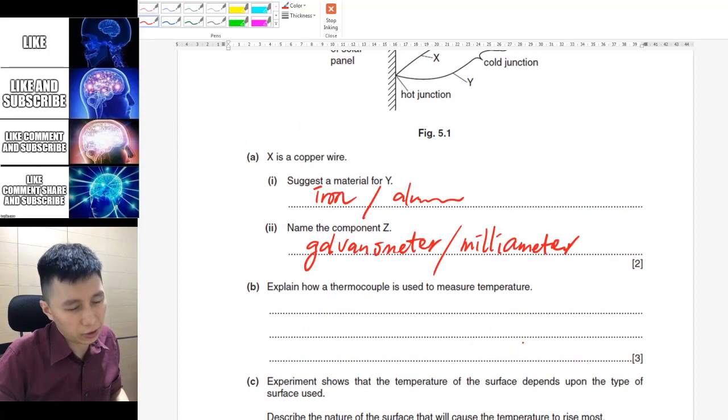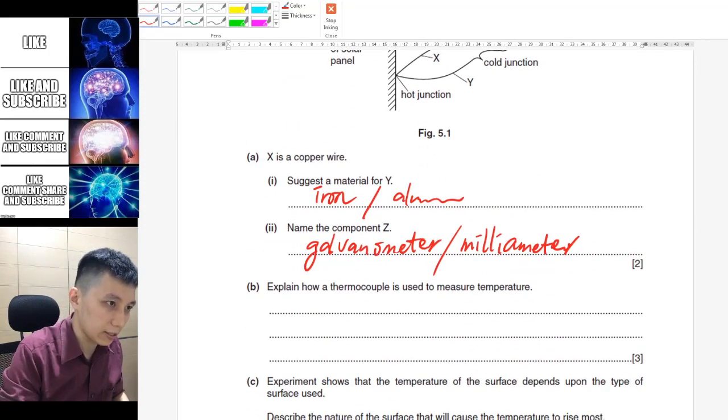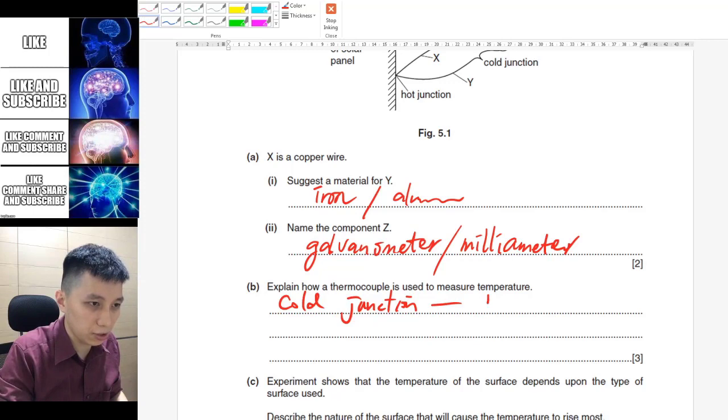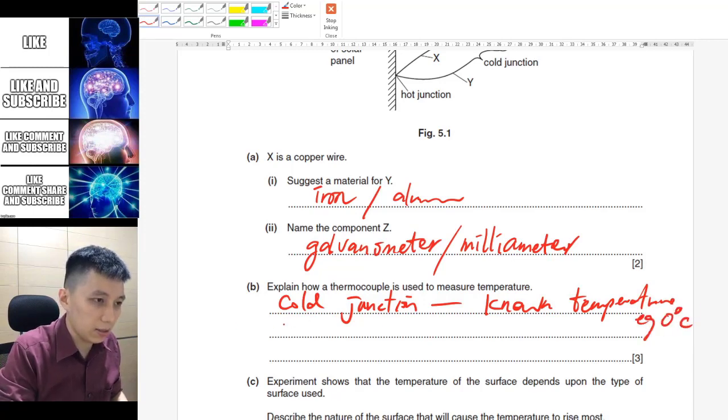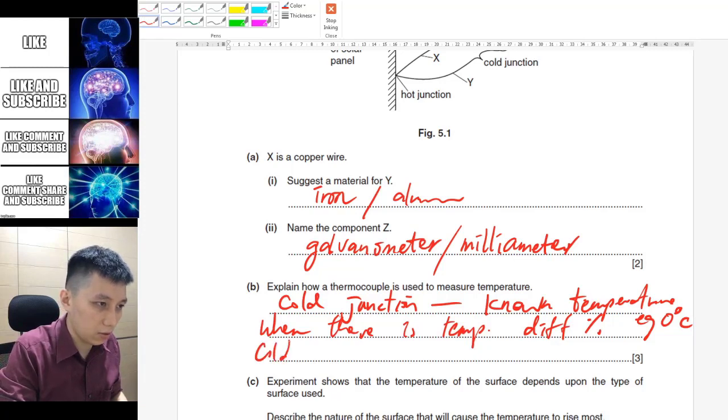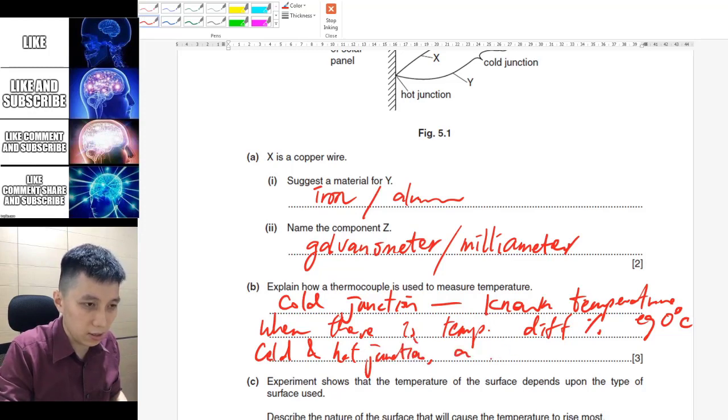Part B asks you to explain how it works, basically to measure temperature. So you have to say the keywords. You should arrange it in a sentence: cold junction is at known temperature, such as zero degrees Celsius, and then when there is a temperature difference between cold and hot junction, a current or you can say voltage will be produced.